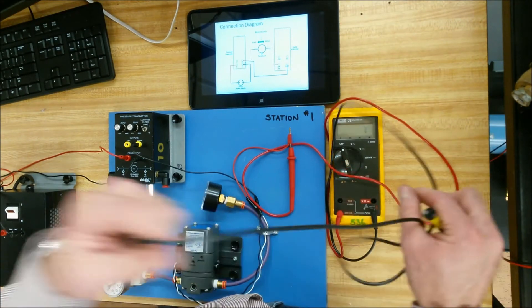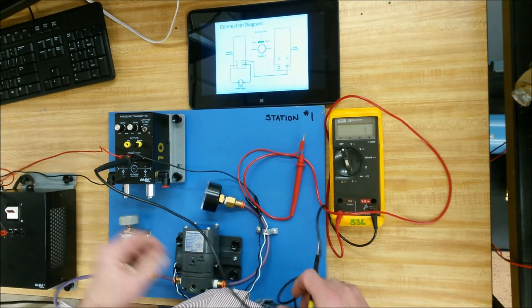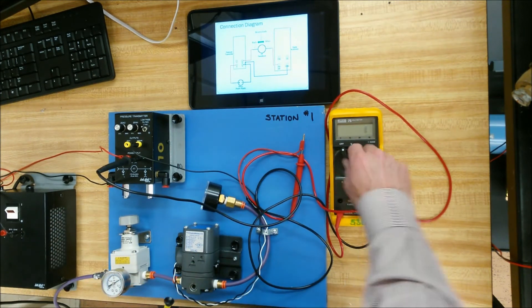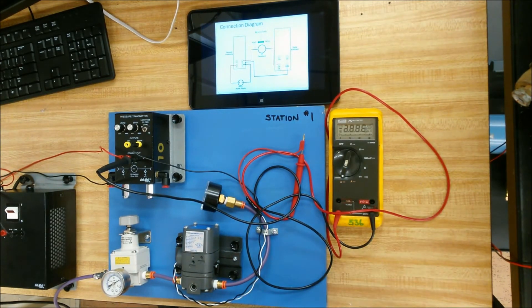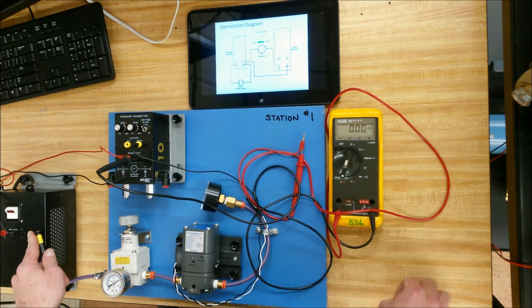And now to finish off the circuit, we're going to bring the common back to the negative of the 24 volts. Again, the power is off before I turn this to select DC current. Otherwise, if the power is on and you turn that, you will blow the fuse.